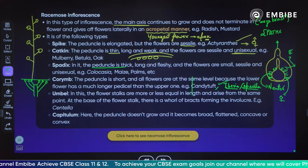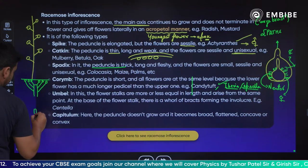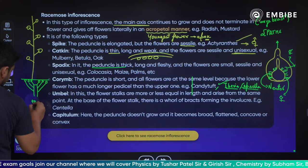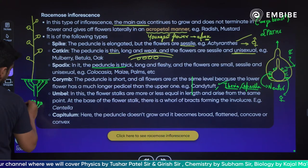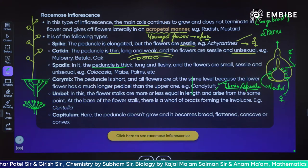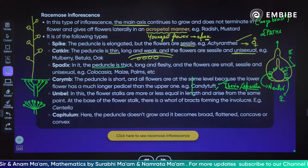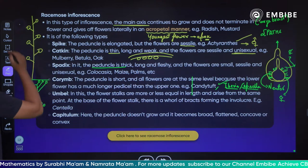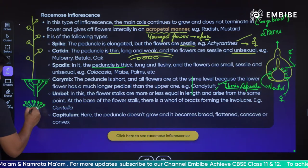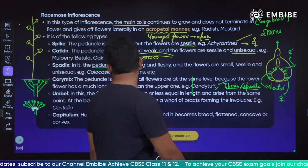Next is umbel. In umbel, as the name suggests, it gives an umbrella-like appearance. The flower stalks are more or less equal in length and arise from the same point. At the base of the flower stalks there is a whorl of bracts called the involucre. Example is Centella.